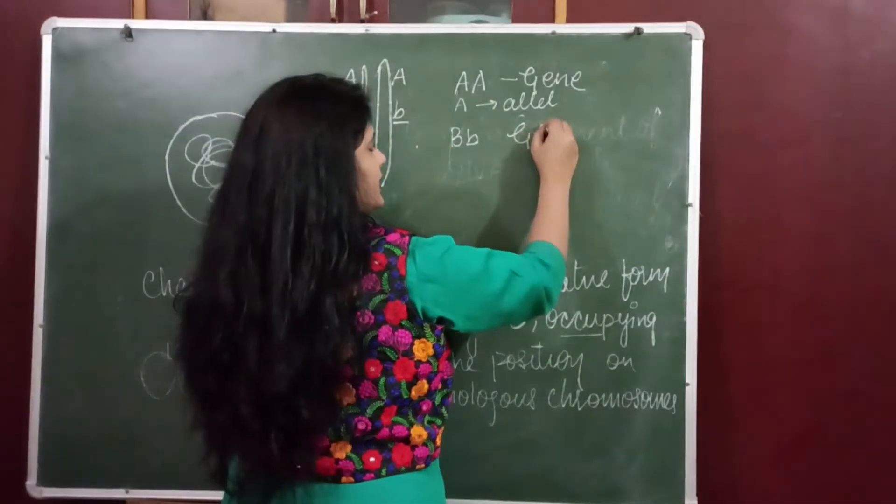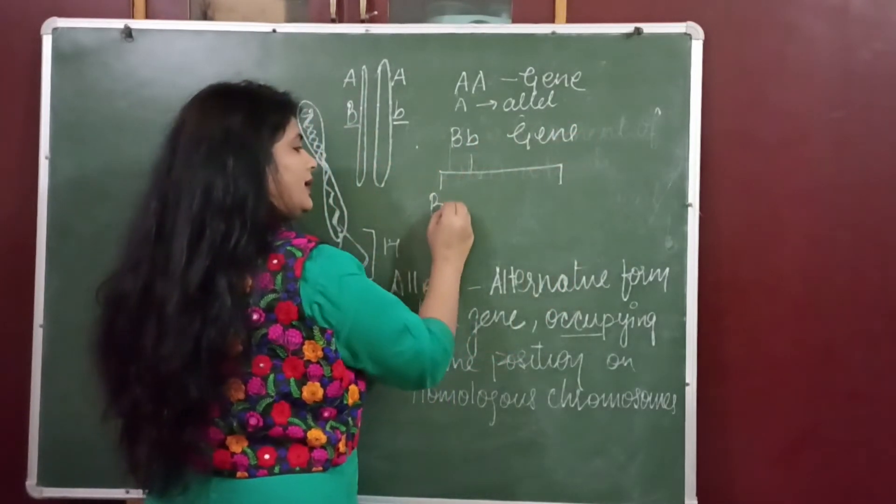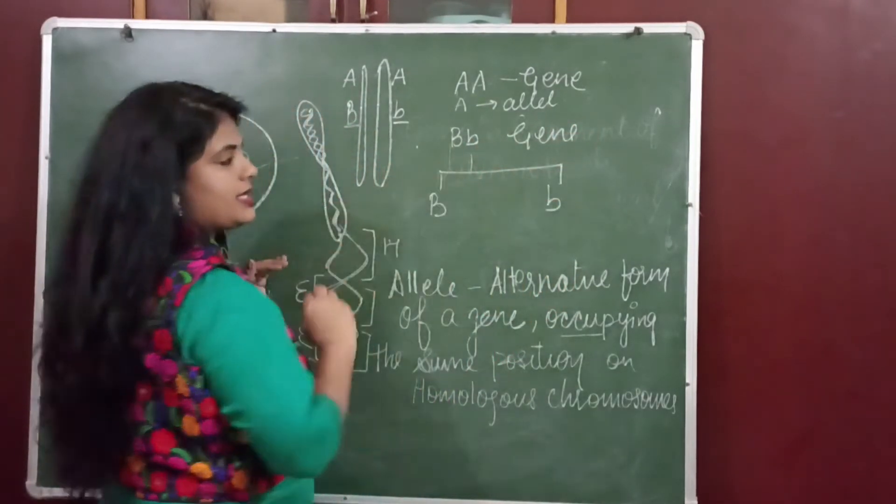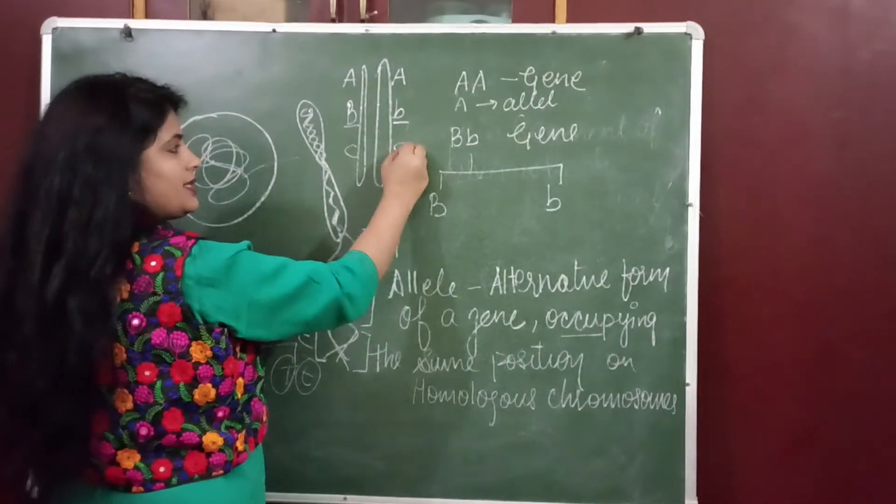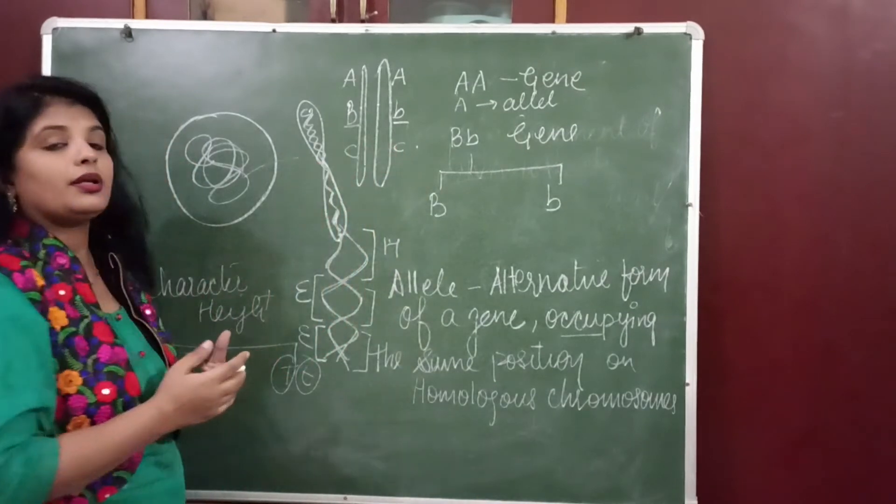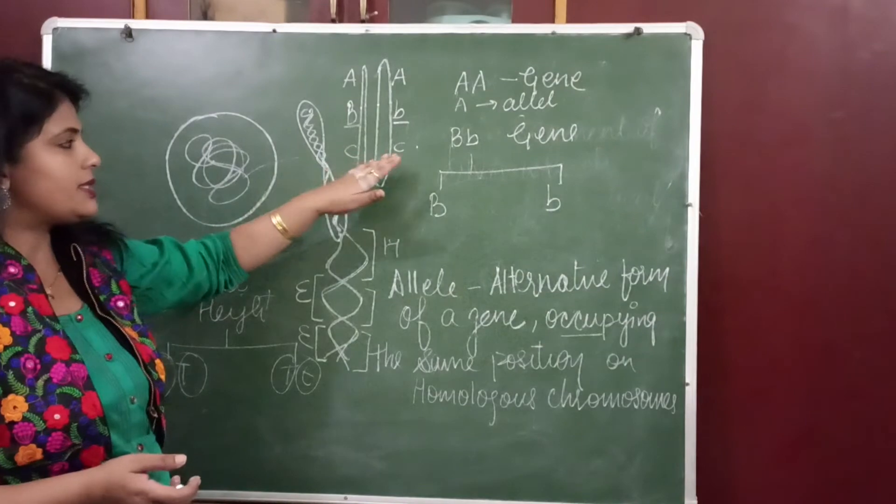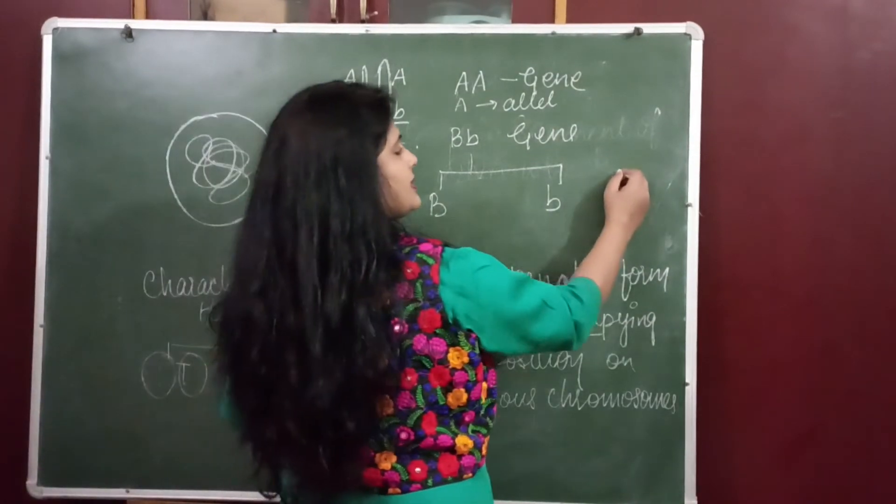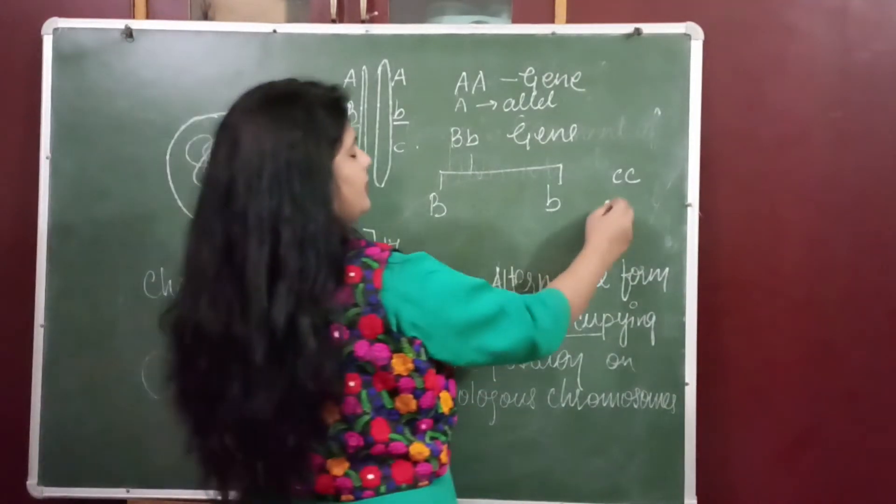Similarly, the allele could be recessive. This is for color of eye. So for color of eye there is small c small c - this is a gene of color of eye for me and there are two alleles and both of the alleles are recessive.